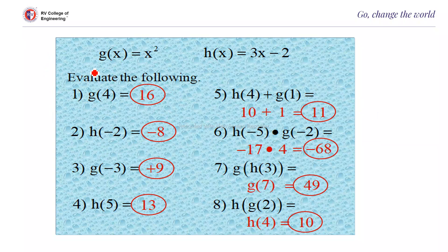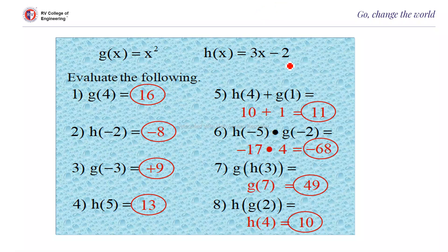Evaluate the following functions: g(x) = x², so g(4) = 16. For h(x) = 3x - 2, h(-2) = 3(-2) - 2 = -8. Substituting the x value by -2 gives the result.